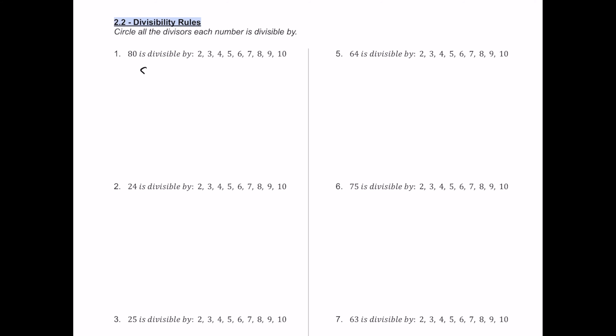For number one we have the number 80. To see if the number is divisible by 2, you just have to look at the last digit — if it's even, you can divide by 2. Dividing by 2 gets 40. Can you divide that by 2 again? Yes, giving 20, so 4 works. Taking half one more time gets 10, so 8 works. Always think about your 2s, 4s, and 8s together.